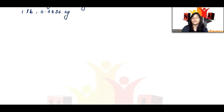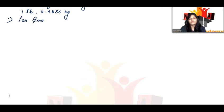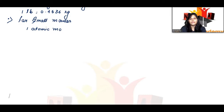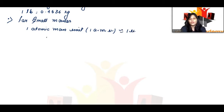So those were the heavier masses. Similarly, for small masses, you can take 1 atomic mass unit. Written as 1u, where 1u is equal to 1.66 x 10 to the power -27 kg.